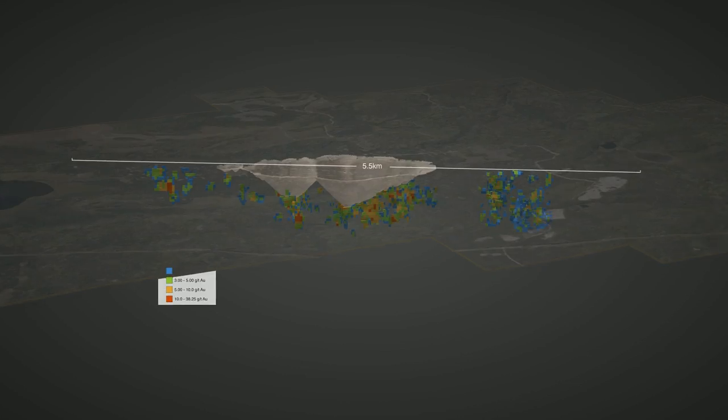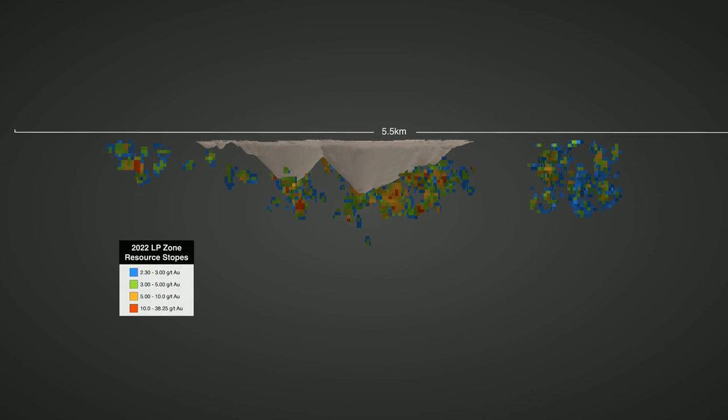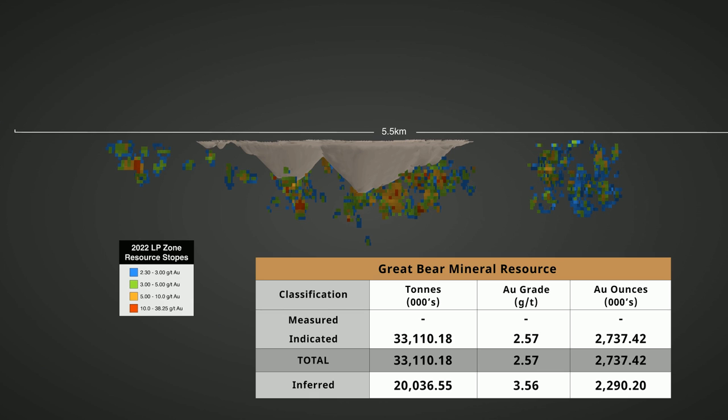We are very pleased with the initial high-grade resource for the Great Bear Project of 2.7 million ounces indicated and 2.3 million ounces inferred.